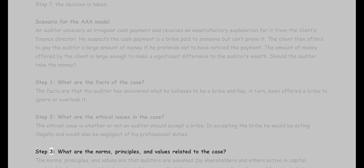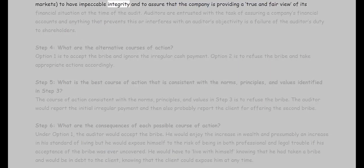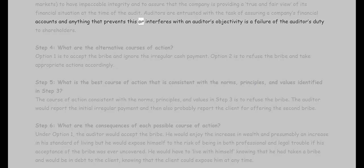Step three — what are the norms, principles, and values related to the case? The norms, principles, and values are that auditors are assumed, by shareholders and others active in capital markets, to have impeccable integrity and to assure that the company is providing a true and fair view of its financial situation at the time of the audit. Auditors are entrusted with the task of assuring a company's financial accounts, and anything that prevents this or interferes with an auditor's objectivity is a failure of the auditor's duty to shareholders.